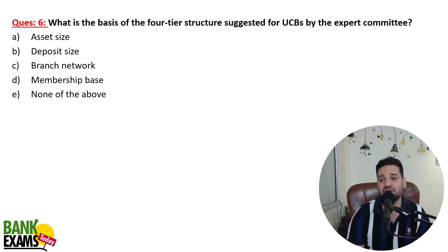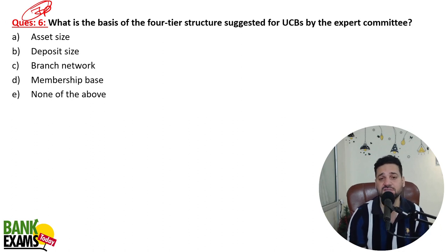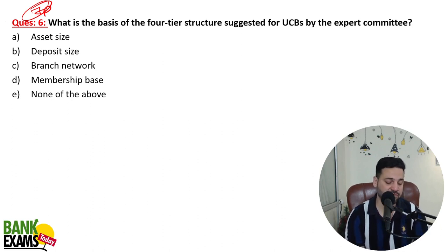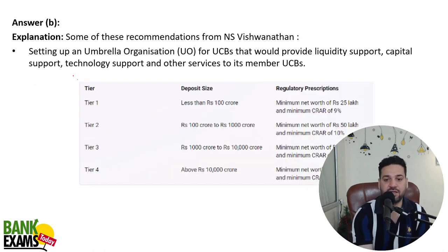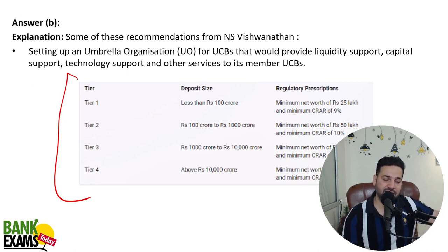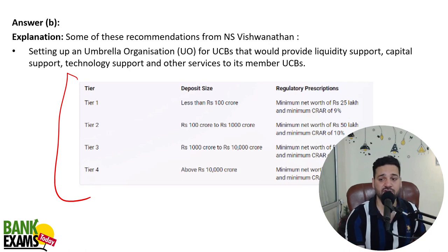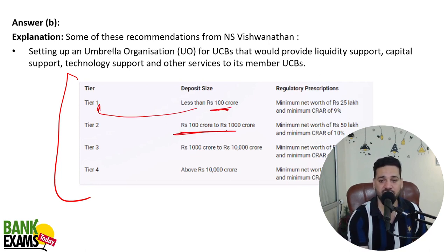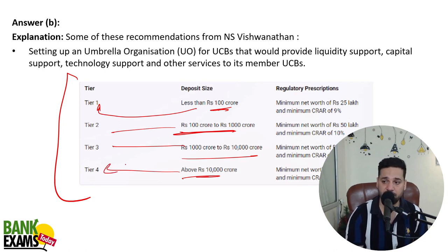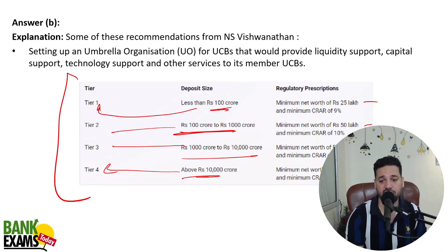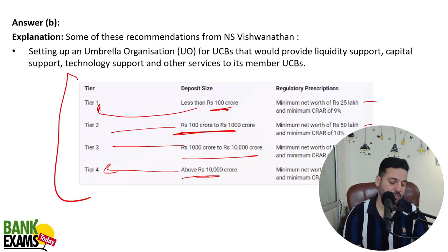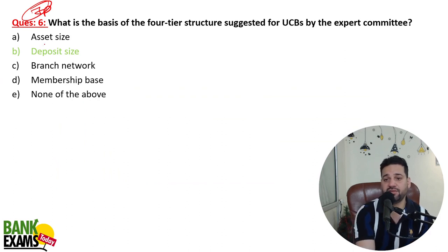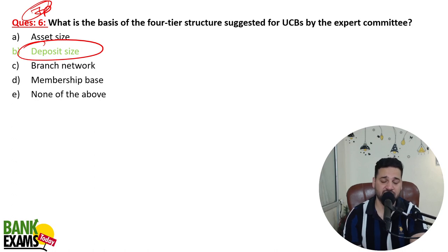What is the basis of the four-tier structure suggested for Urban Cooperative Banks by the expert committee? The tiers are categorized based on deposit size. If the deposit is up to 100 crore, it is Tier 1. From 100 to 1,000 crore is Tier 2; 1,000 to 10,000 crore is Tier 3; and above 10,000 crore is Tier 4. The minimum net worth requirements are: 25 lakhs for Tier 1, 50 lakhs for Tier 2, 5 crores for Tier 3, and 50 crores for Tier 4. CRR requirements also differ by tier.